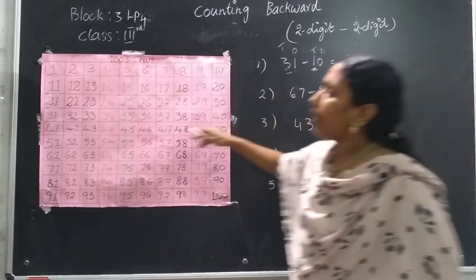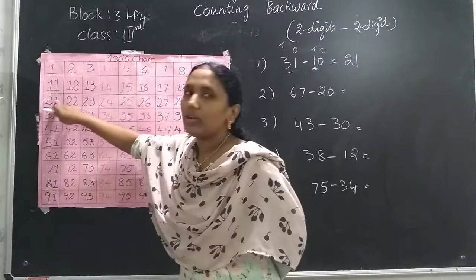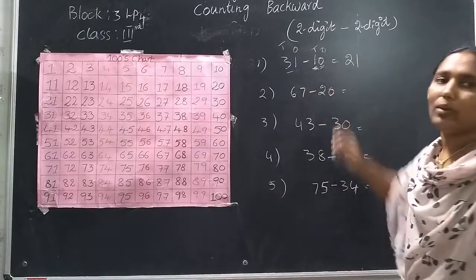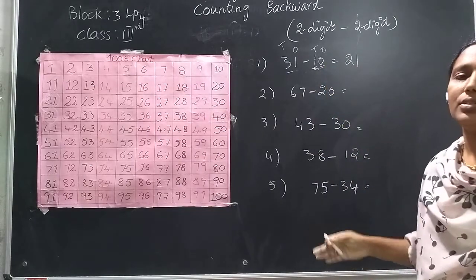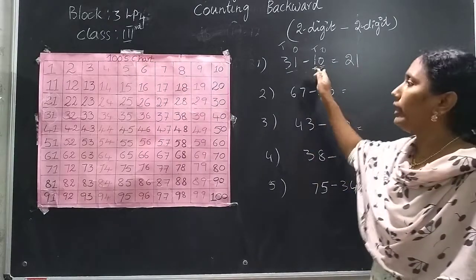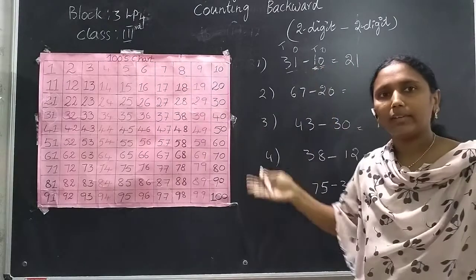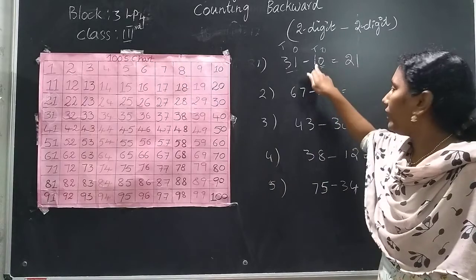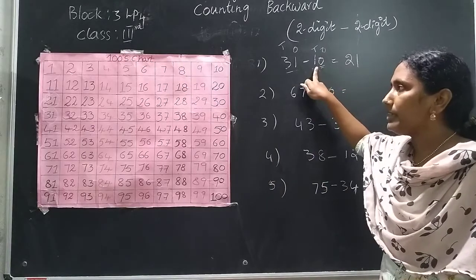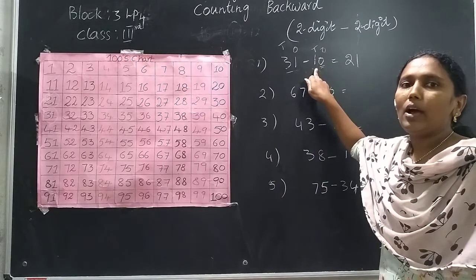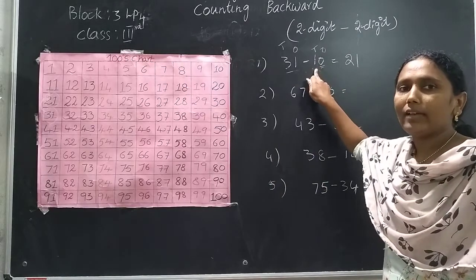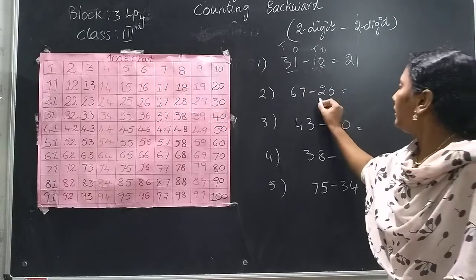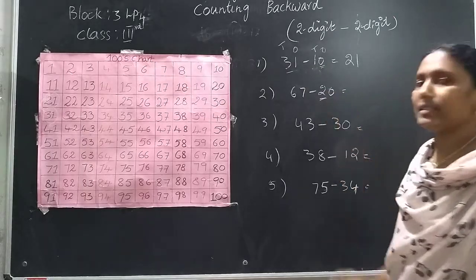In the 1's place I have only 0, so don't move any steps backward for the 1's place. Only look at the 10's place and see how many steps to move backward. Now see the next example.